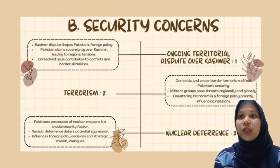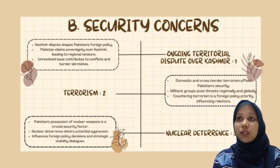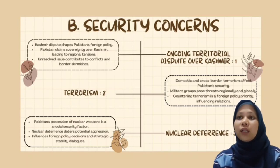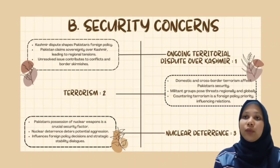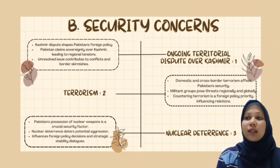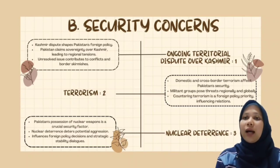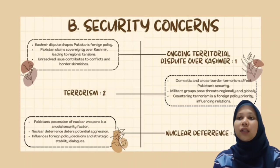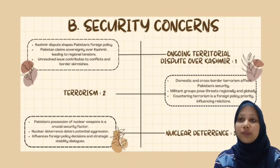Pakistan is a nuclear-armed state, and its nuclear weapons program is a major concern for the international community. There is a risk that Pakistan's nuclear weapons could fall into the wrong hands or be used to threaten its neighbors. Additionally, Pakistan is an economically unstable country with a high debt burden and an economy vulnerable to external shocks. Economic instability is a major security concern as it can lead to social unrest and make the country more vulnerable to terrorism and extremism.